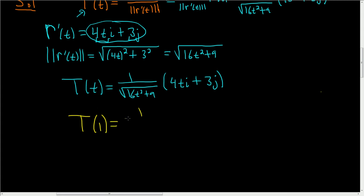This is 1 over the square root of... if we plug in 1 here, we get 16, so 16 plus 9, times (4 times 1, which is 4i plus 3j).